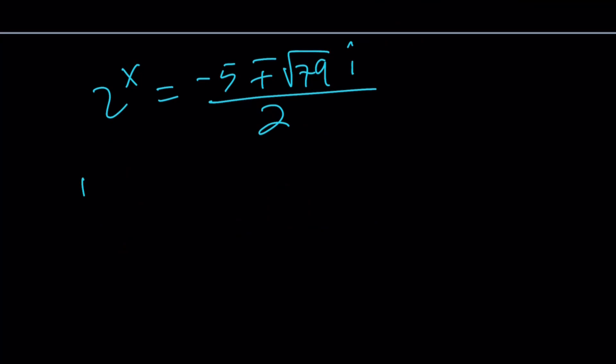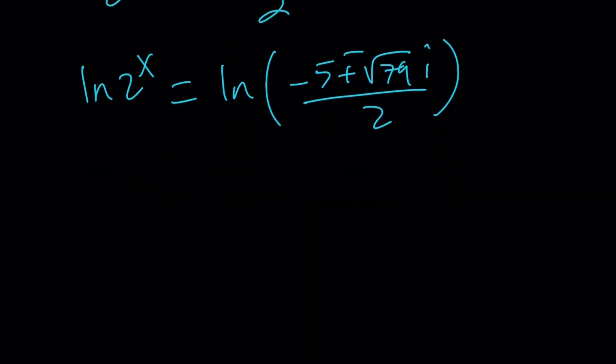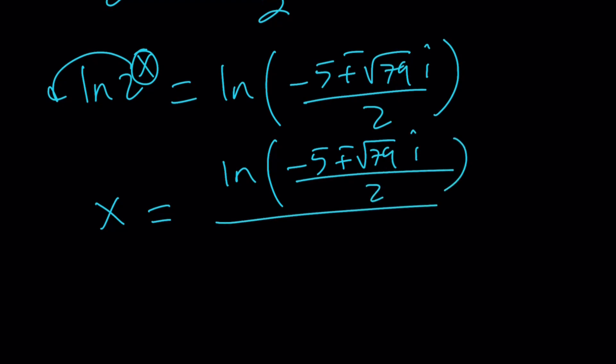2 to the power x equals negative 5 plus minus the square root of 79i over 2. Obviously, if you ln both sides, ln 2 to the x equals ln this. And this is a complex number. So aligning it is going to be a little complex. So I'm just going to write it like this and leave it at that. But it can be done. How is it done? Something to think about. Anyway, so this is the other two solutions that are not real, of course.